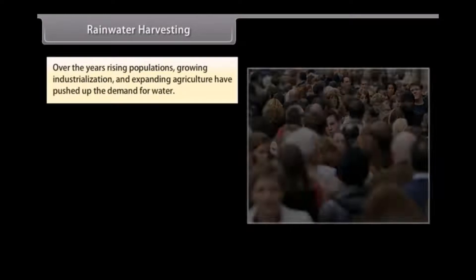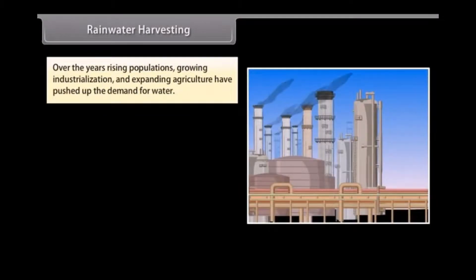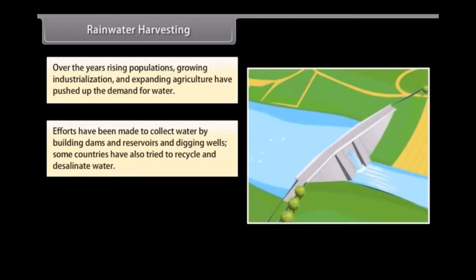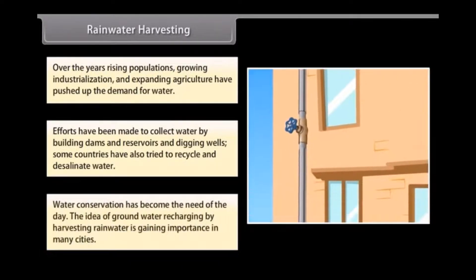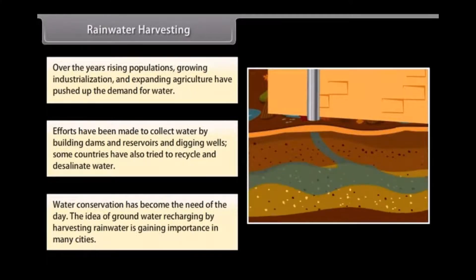Over the years, rising populations, growing industrialization, and expanding agriculture have pushed up the demand for water. Efforts have been made to collect water by building dams and reservoirs and digging wells, and some countries have also tried to recycle and desalinate water. Water conservation has become the need of the day, and the idea of groundwater recharging by harvesting rainwater is gaining importance in many cities.